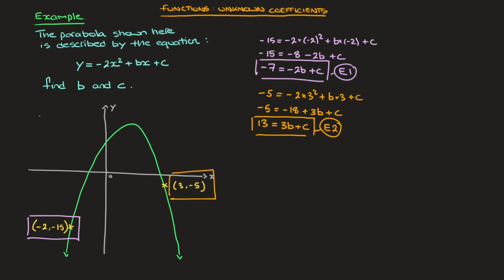At this stage we have two equations involving the two unknowns we're after, so we solve them simultaneously. Looking at these two equations, we can see that both have a plus c at the end. So if we subtract one from the other, we'd eliminate the unknown c. I'll find equation 2 minus equation 1. On the left-hand side we'd have 13 minus negative 7, which is 13 plus 7, which is 20. On the right-hand side we'll have 3b minus negative 2b, so that's 3b plus 2b, which is 5b. And of course c minus c is 0, so we've eliminated c.